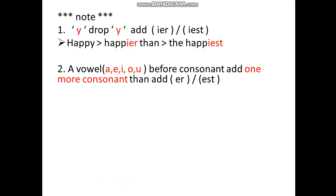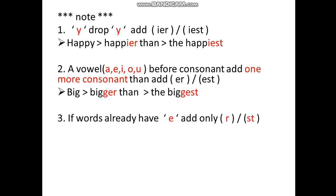Rule two: if a word has a vowel (a, i, o, u) before a consonant, you add one more consonant, then add '-er' or '-est'. Example: 'big' — adjective. Comparative is 'bigger than' — you add one more 'g' because there is a vowel 'i' before 'g'. Superlative is 'the biggest' — add one more 'g', then '-est'.